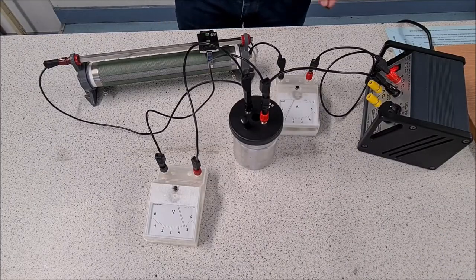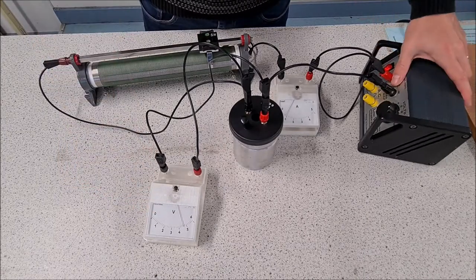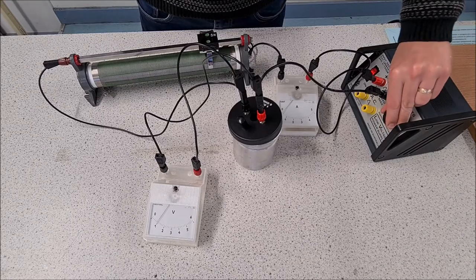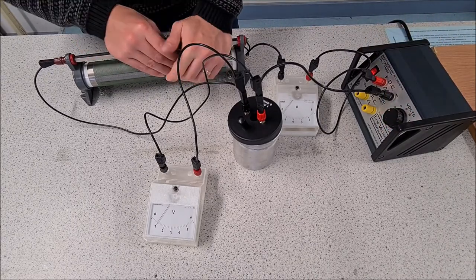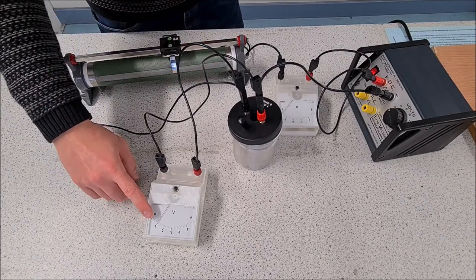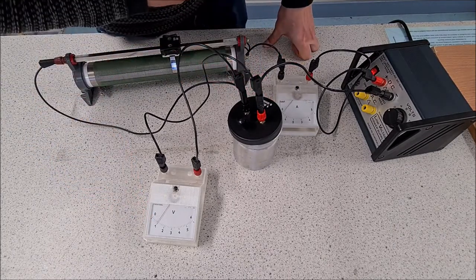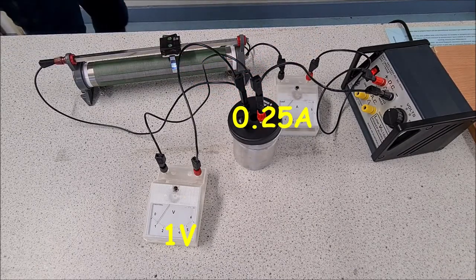What we're going to start with is we're going to get a potential difference of one volt. So we're going to change the power supply here, bring it right down, and then you also change the variable resistor. And what you do is you want to get one volt on your voltmeter. All right, so we have one volt there and we have a reading on the ammeter which is about 0.25. All right, so we'll write that up, fill that into your table.